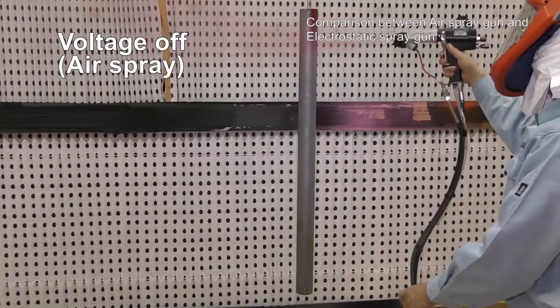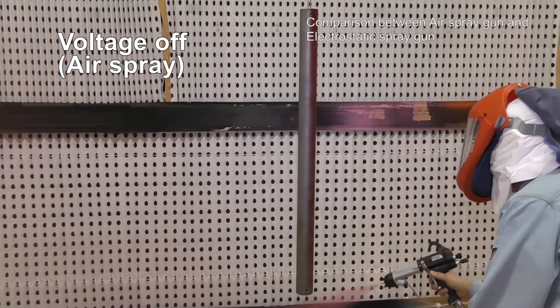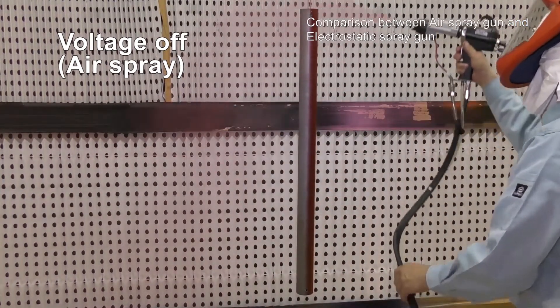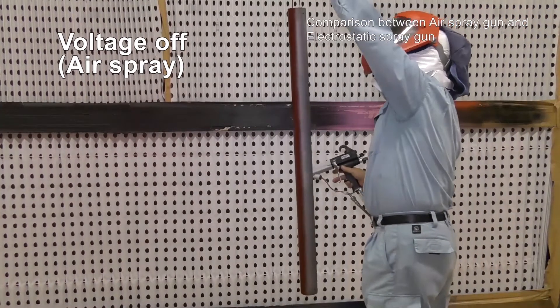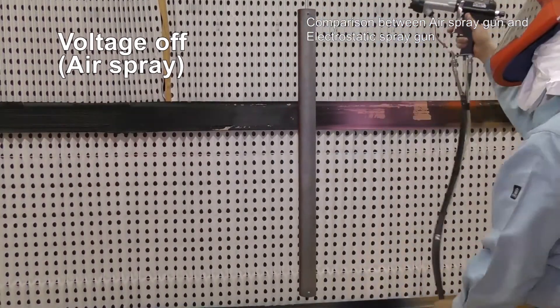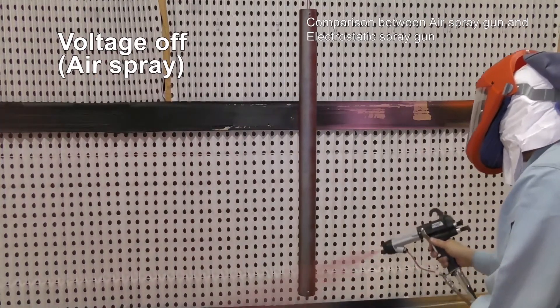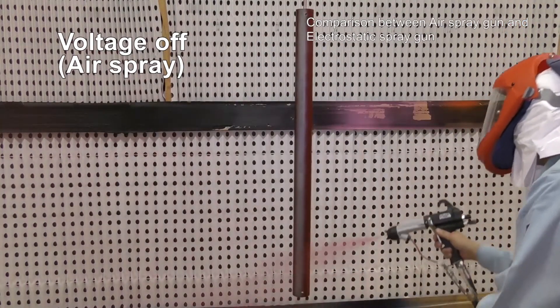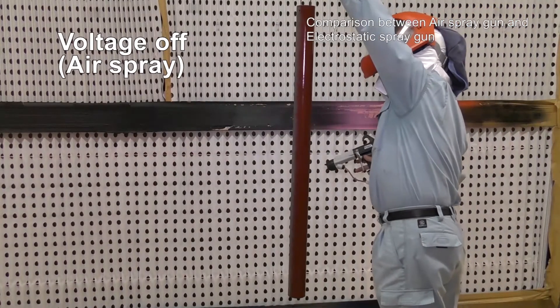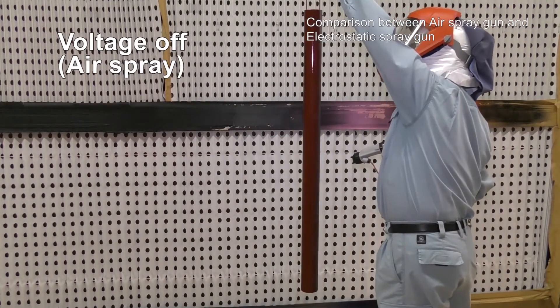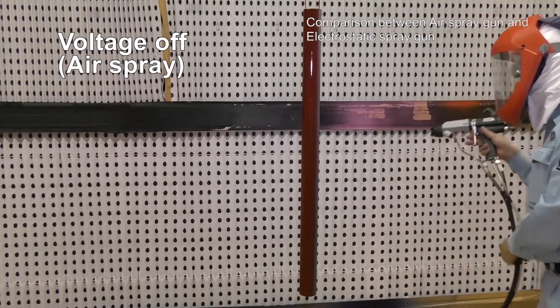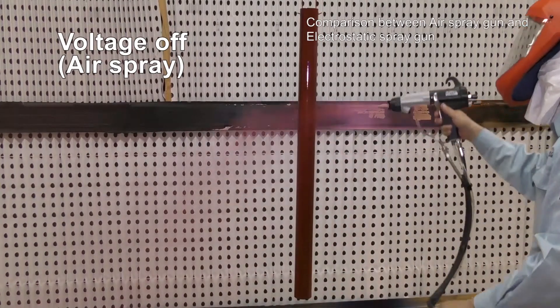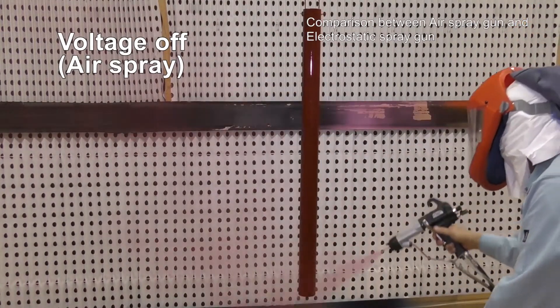We have to spray this pipe from at least four different directions to finish with voltage off. With voltage on, the material coats the back and all surfaces from the front.